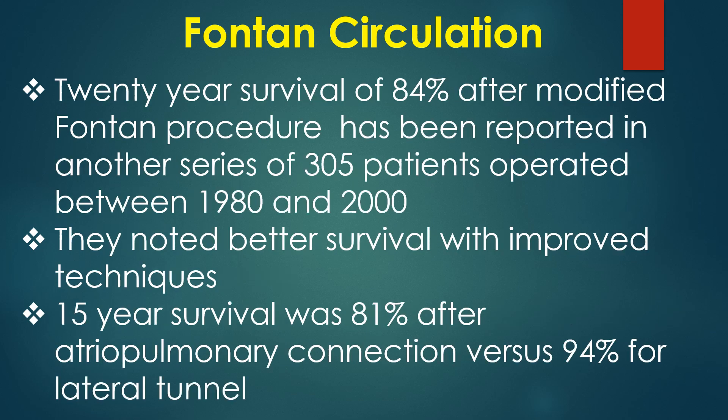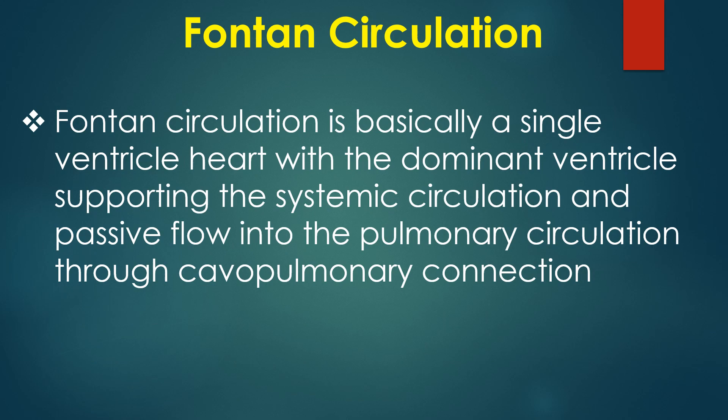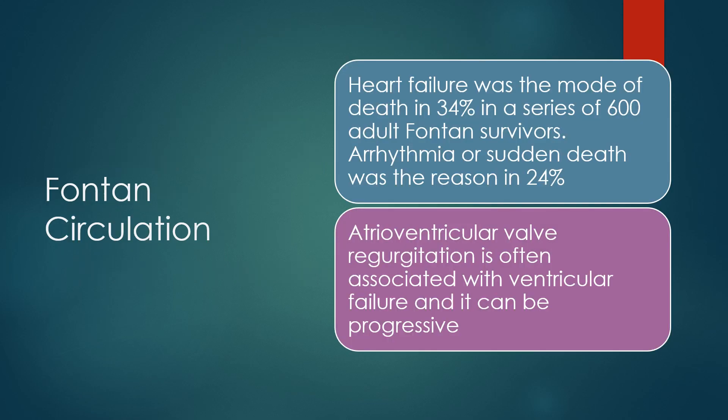Protein-losing enteropathy markedly reduced survival: 10-year survival came down to 35% and 20-year survival to just 19%. In another series of 305 patients operated between 1980 and 2000, 15-year survival was 81% after atriopulmonary connection versus 94% for lateral tunnel Fontan. Fontan circulation is basically a single ventricle heart with the dominant ventricle supporting the systemic circulation and passive flow into the pulmonary circulation through cavopulmonary connection. Heart failure was the mode of death in 34% in a series of 600 adult Fontan survivors, and arrhythmia or sudden death in 24%.